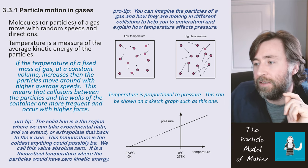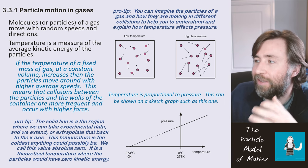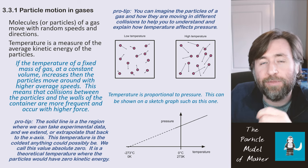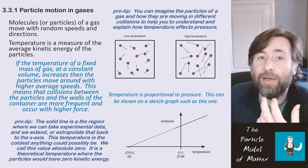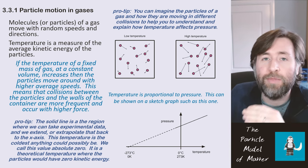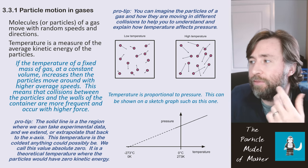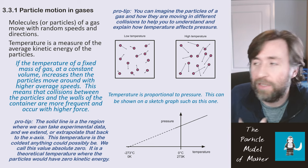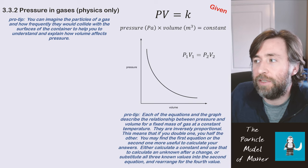We can extrapolate back to the origin of the graph, where the line would cut the x-axis, and that point is called absolute zero. If you could imagine a material with zero kinetic energy, that would be at zero degrees Kelvin — absolute zero. You need to have the idea that there is a theoretical minimum temperature, a theoretical zero. There's no theoretical maximum temperature, because we could theoretically increase the kinetic energy of particles infinitely.